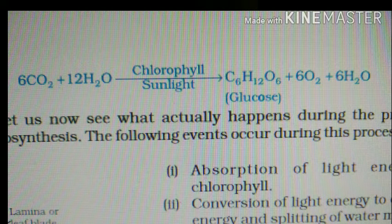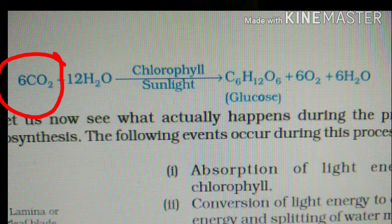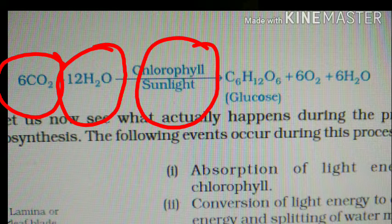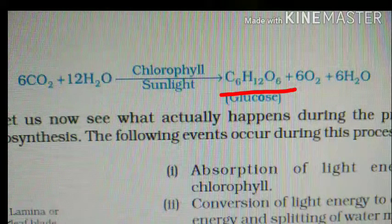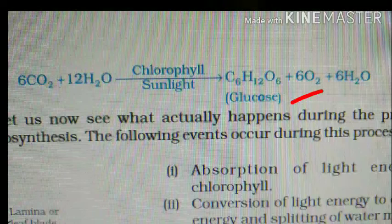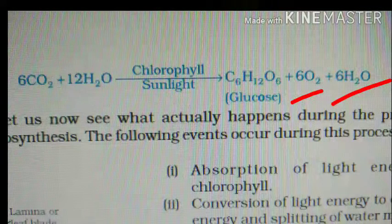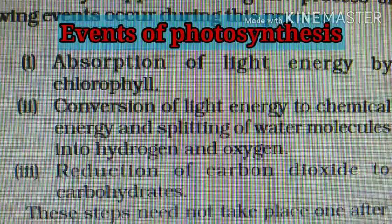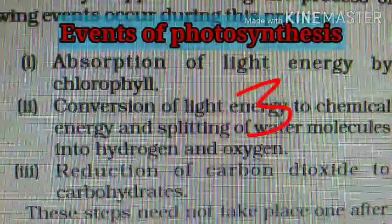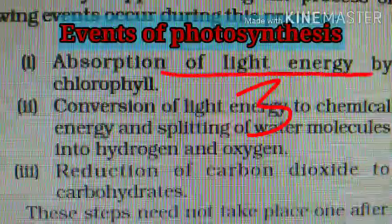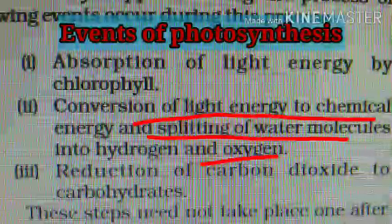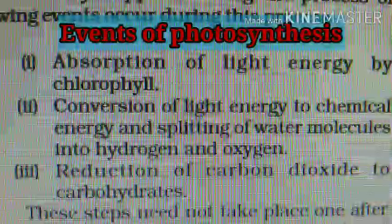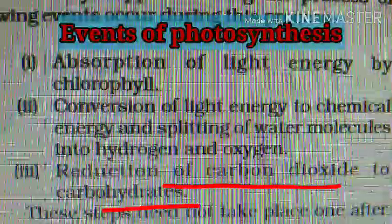Here is the equation of photosynthesis: 6CO₂ + 12H₂O in the presence of chlorophyll and sunlight produces glucose (C₆H₁₂O₆) plus 6O₂ (six molecules of oxygen) and 6H₂O (six molecules of water). The three main processes of photosynthesis are: absorption of light energy by chlorophyll, conversion of light energy to chemical energy and splitting of water molecules into hydrogen and oxygen, and third, reduction of carbon dioxide to carbohydrates.